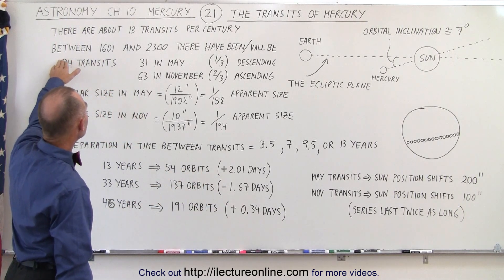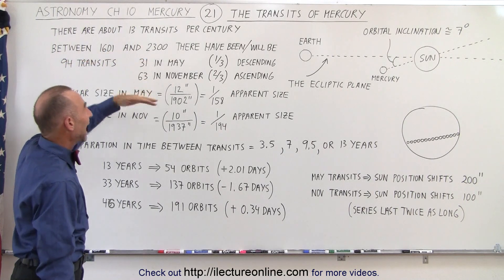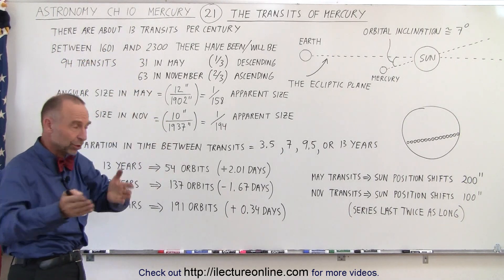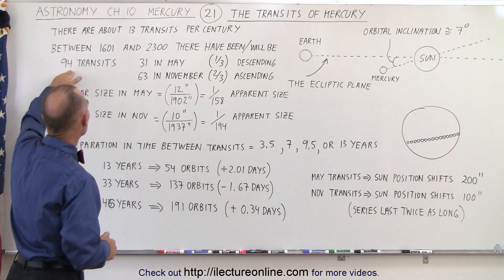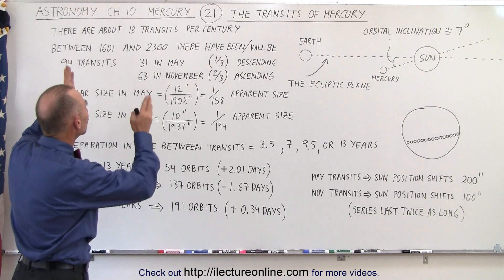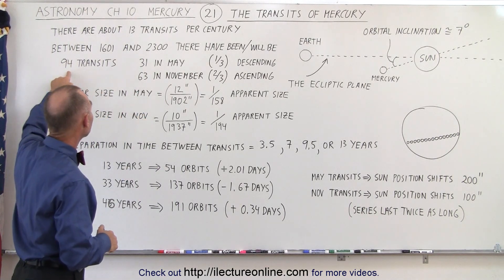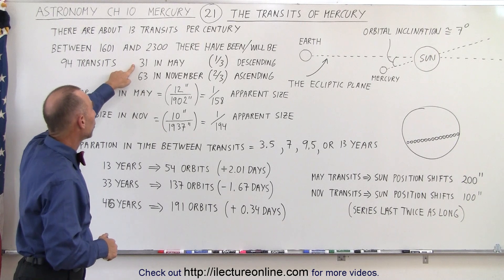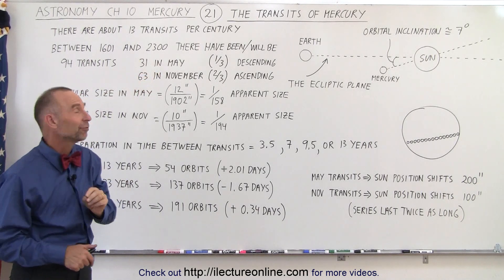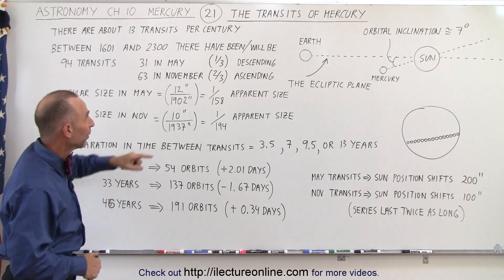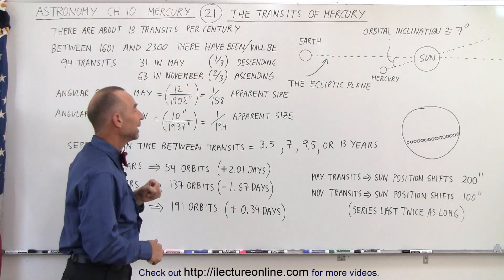Between the years 1601 and 2300 — looking at both the past and calculating the future — there will be a total of 94 transits during that 700-year period. Of those 94, 31 will happen in the month of May and 63 will happen in the month of November. So about one-third happen in May and two-thirds happen in November.